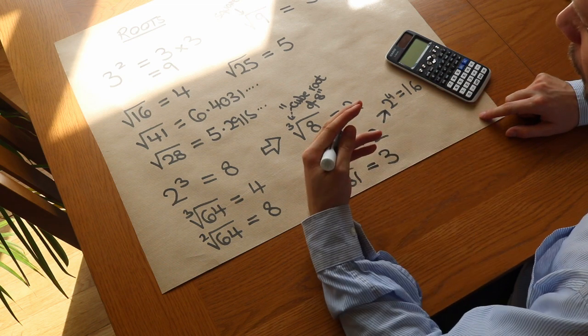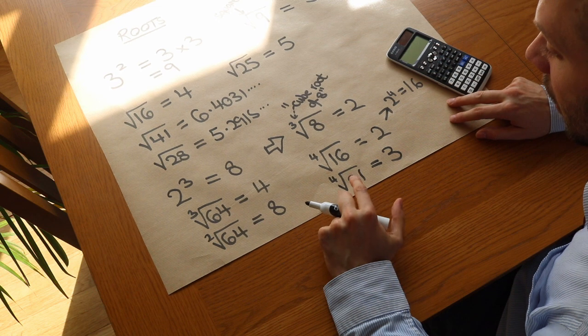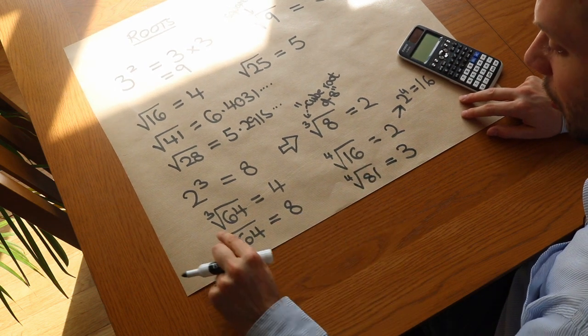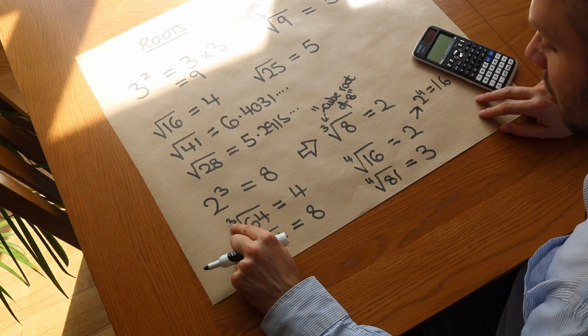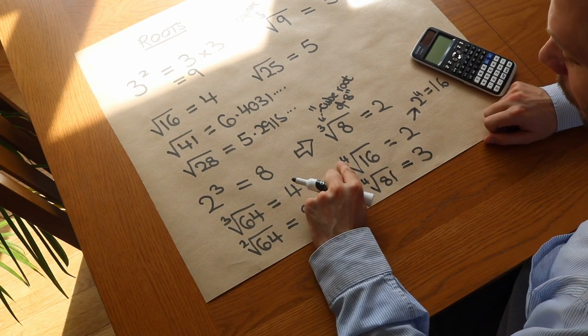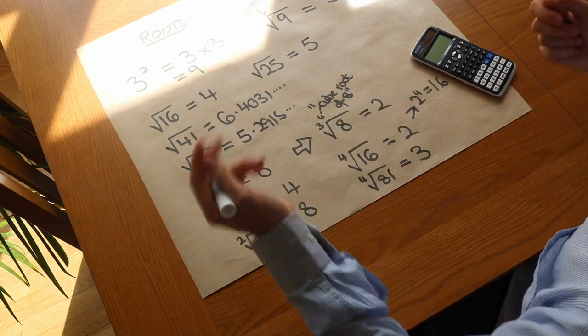We could have a 5 there, which we'd say is the 5th root. We have special names if the number is either 2 or 3. We call that the square root, or we don't put the number. We call that the cube root, but we don't have any special names from 4 onwards. We just call it the 4th root, the 5th root, etc.